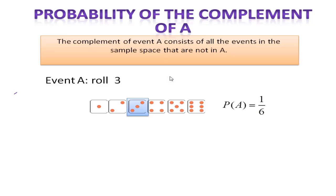Now, the probability of the complement of A, what we're talking about here is the event that is not A. So if event A is rolling a 3, the complement of A would be not rolling a 3.